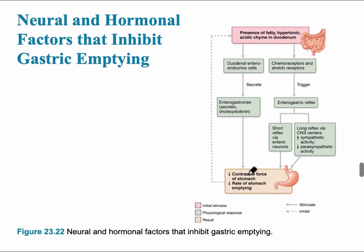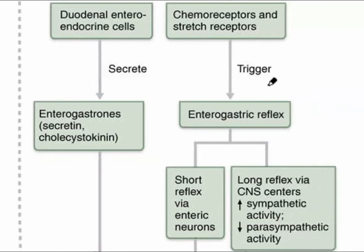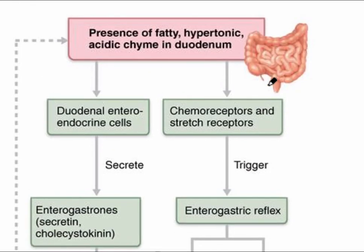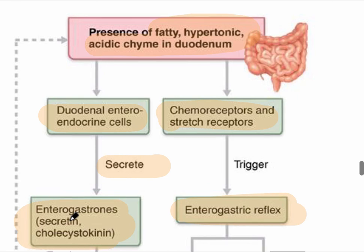The final slide summarizes the neural and hormonal factors that inhibit gastric emptying. The presence of fatty, hypertonic, and acidic chyme in the duodenum all play a similar role depending on what's most prevalent. The chemoreceptors and stretch receptors trigger the enterogastric reflex, while the duodenal endocrine cells secrete the enterogastrons — secretin and cholecystokinin.